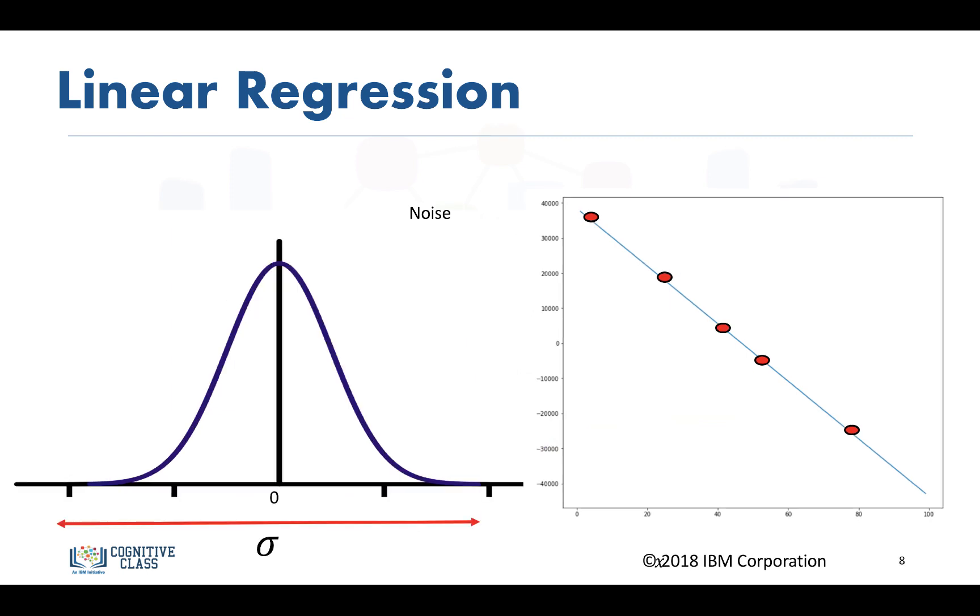One important thing to notice is the higher the variance or standard deviation of the noise, the more the points deviate from the line. This is sometimes called the noise power.